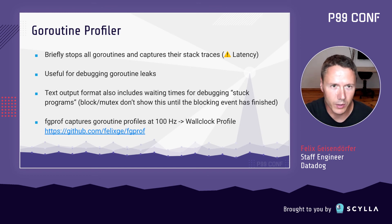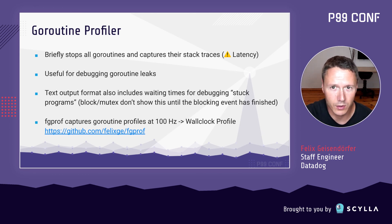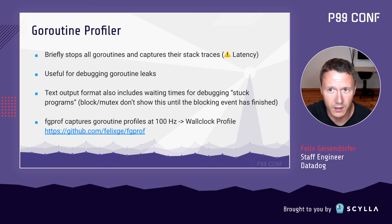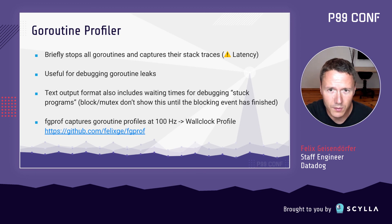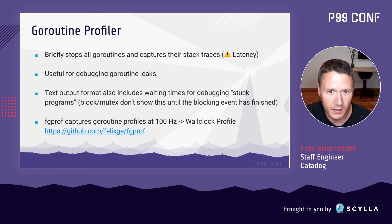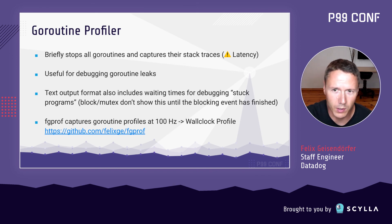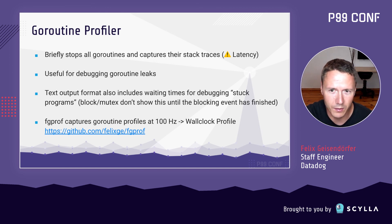The last built-in profiler is the goroutine profiler. It works by briefly stopping all goroutines and capturing a stack trace for each. This is useful for debugging goroutine leaks. The text output can also show how long goroutines have been in the waiting state, making it one of the best ways to debug a stuck Go program. You can capture goroutine profiles at high frequency — for example 100 times per second — for a wall-clock profile. I've implemented an experimental profiler based on this called fgprof. However, be careful in production as it requires a stop-the-world phase proportional to the number of goroutines.